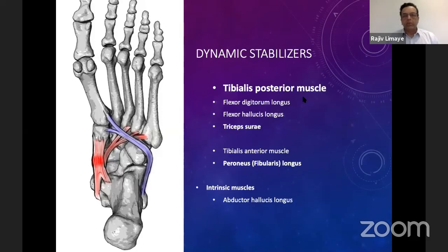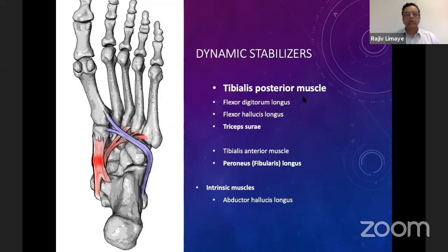The posterior tibial tendon has insertion in all tarsal bones except the talus. In addition to that, there is flexor digitorum longus, flexor hallucis longus, tibialis anterior band, peroneus, and abductor hallucis as well, supporting this area.